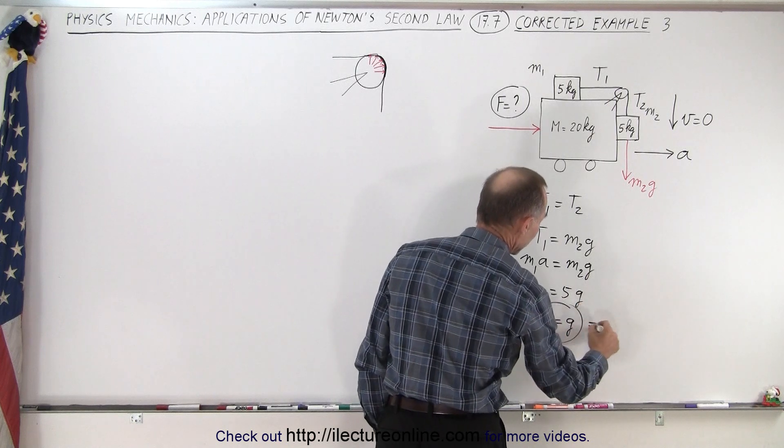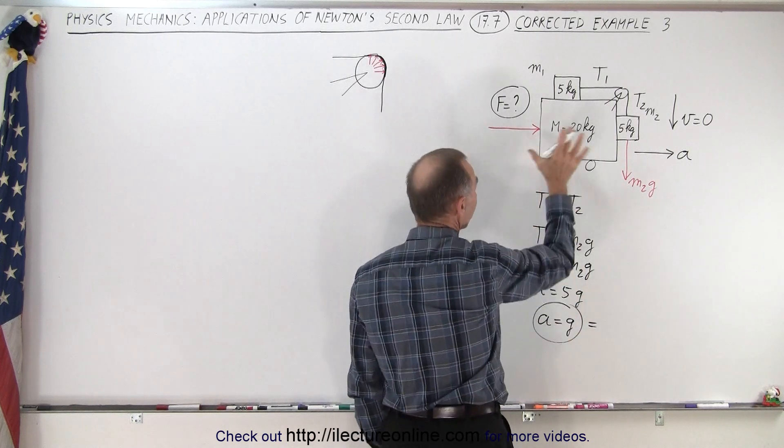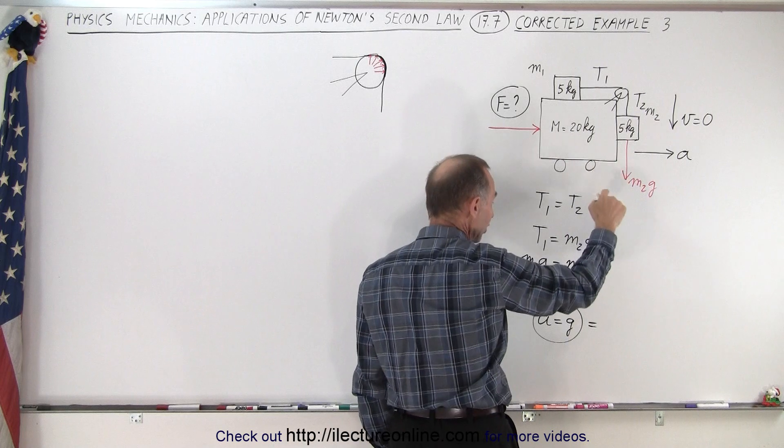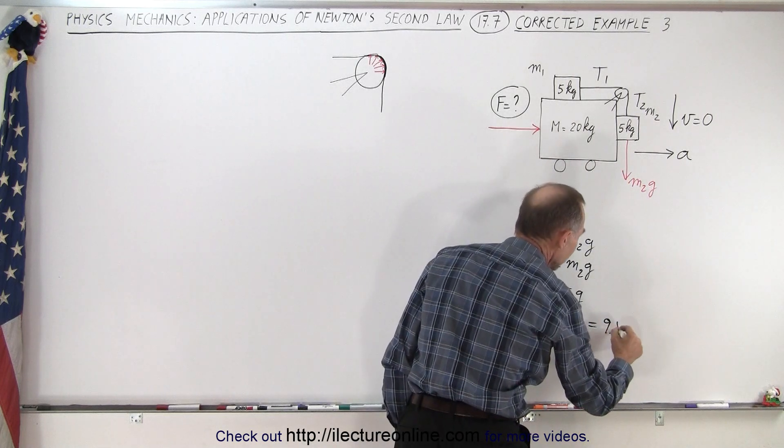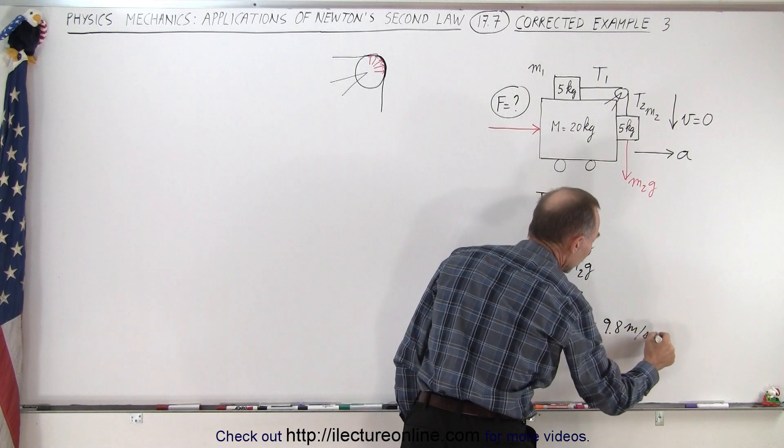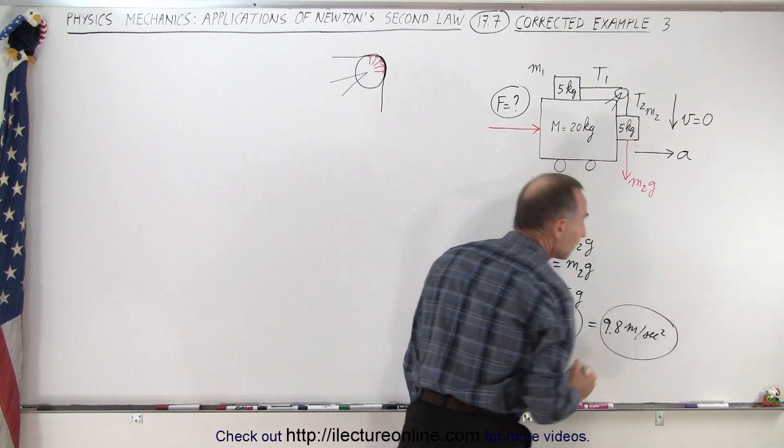In other words, the acceleration we need for the whole system would be equal to G, which is equal to 9.8 meters per second squared in order to keep everything in place.